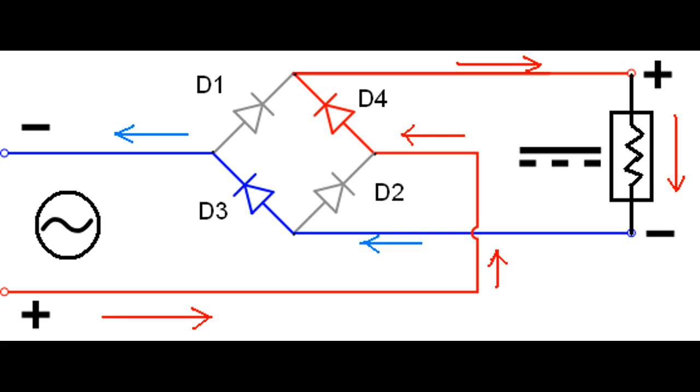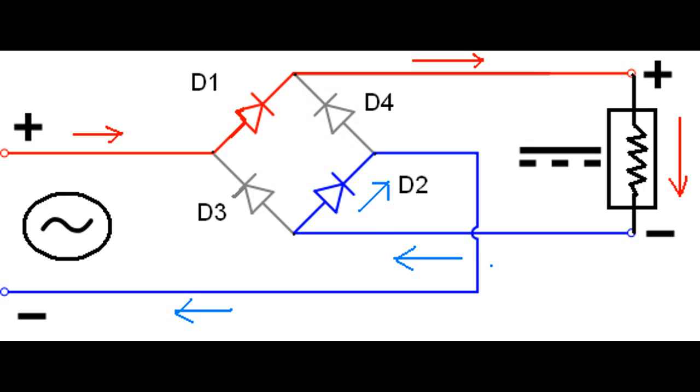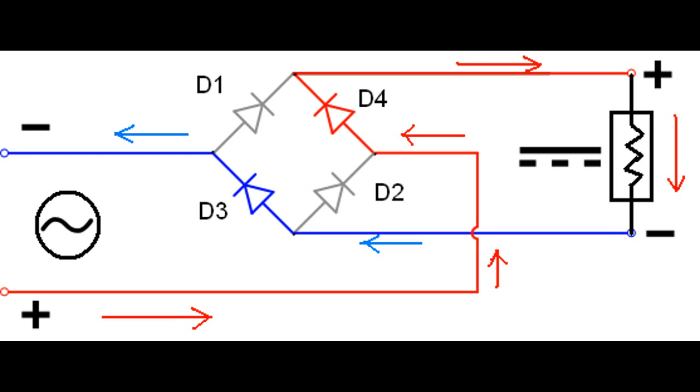So, current flows through D4 to the load resistance and flows back to the source through D3. Notice that during both the half cycles, the current is flowing in a single direction through the load resistance. That is, the bridge rectifier converts the AC to DC.